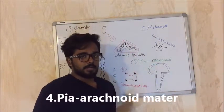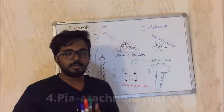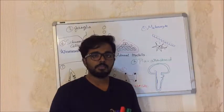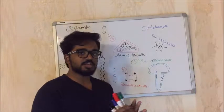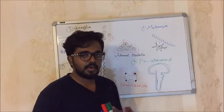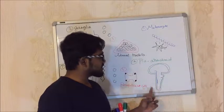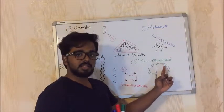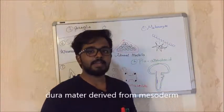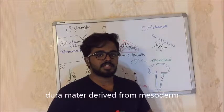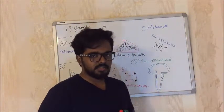Pia Mater, Arachnoid Mater — the Meninges of the Central Nervous System. The CNS is covered by three layers: Dura Mater, Arachnoid Mater, and Pia Mater. Pia Mater and Arachnoid Mater are derived from Neural Crest Cells. Dura Mater, however, is derived from Mesoderm — not from Neural Crest Cells.